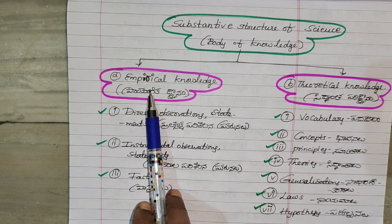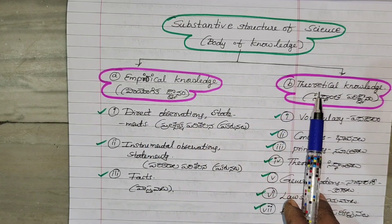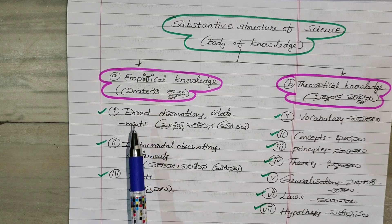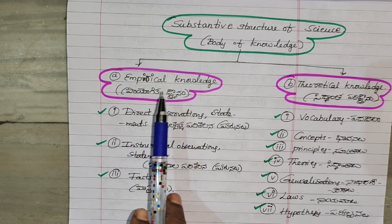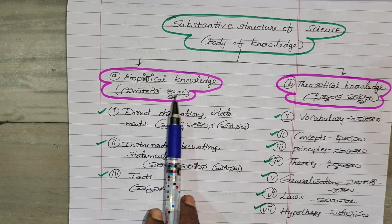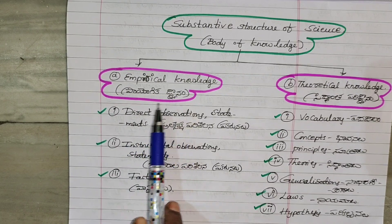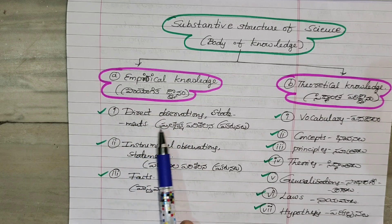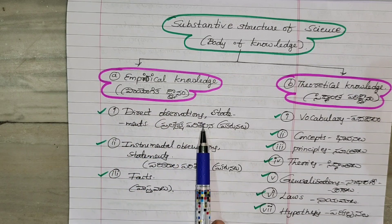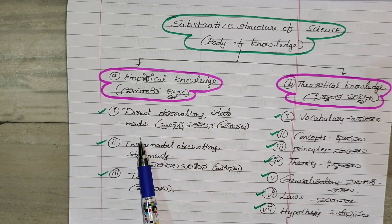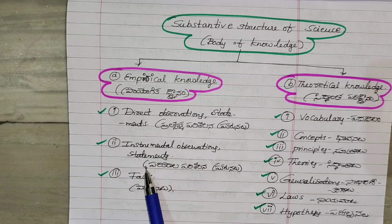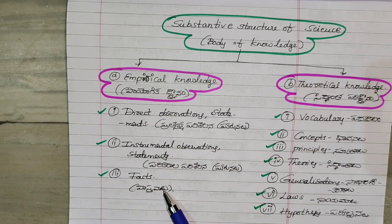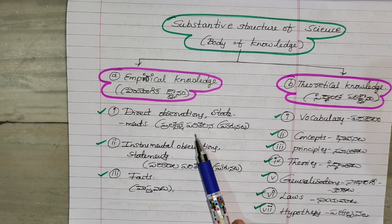One is empirical — the prayogical knowledge. We can do experiments. The empirical knowledge includes: first, direct observation statements; second, instrumental observation statements; and third, facts.